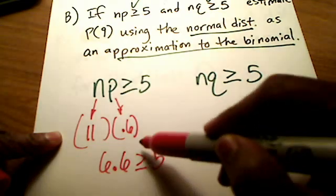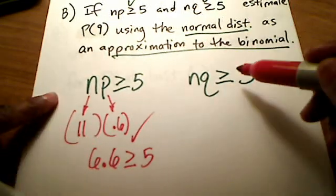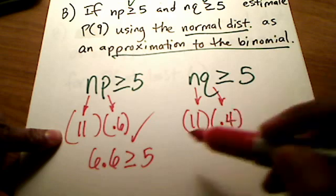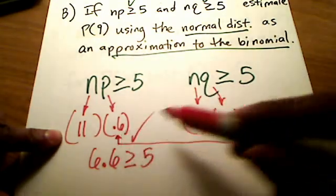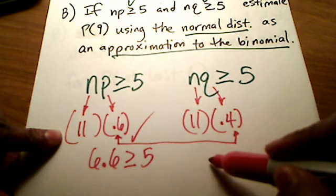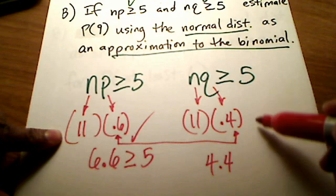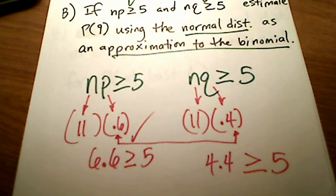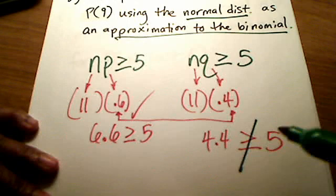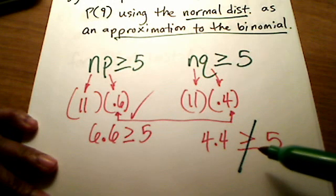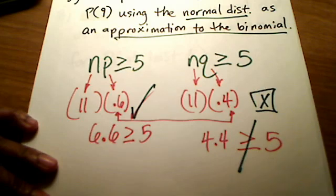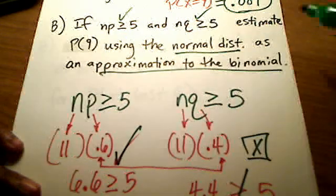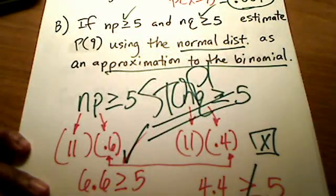But look at n times q: 11 times 0.4 works out to be 4.4. That is not greater than or equal to 5 — so that condition fails. Since both conditions are not satisfied, I cannot use the normal distribution to approximate the binomial for this problem. I'll stop right there. For part B, if you're using something like MyMathLab, I think it says to enter the letter N if it doesn't work.